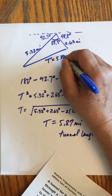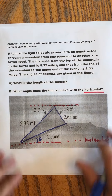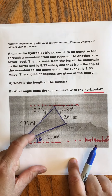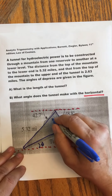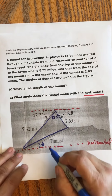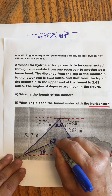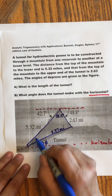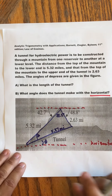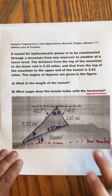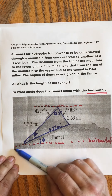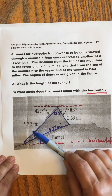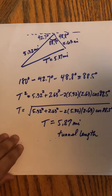Now for part B: what angle does the tunnel make with the horizontal? Remember, that's angle theta — not the interior angle of the triangle. We now know the triangle has sides 5.32, 2.63, and 5.87, with the angle of 88.5° inside. We need to find beta, an angle inside the triangle, and use it to get theta.